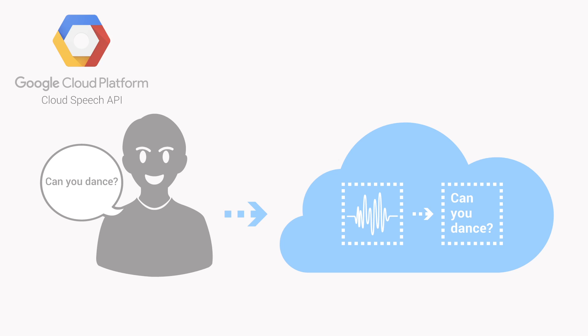Cloud Speech API allows application developers to use Google's best-in-class speech recognition technology through a simple API. You can send audio data directly to the cloud from your application and the API will respond with a text transcription of your audio.